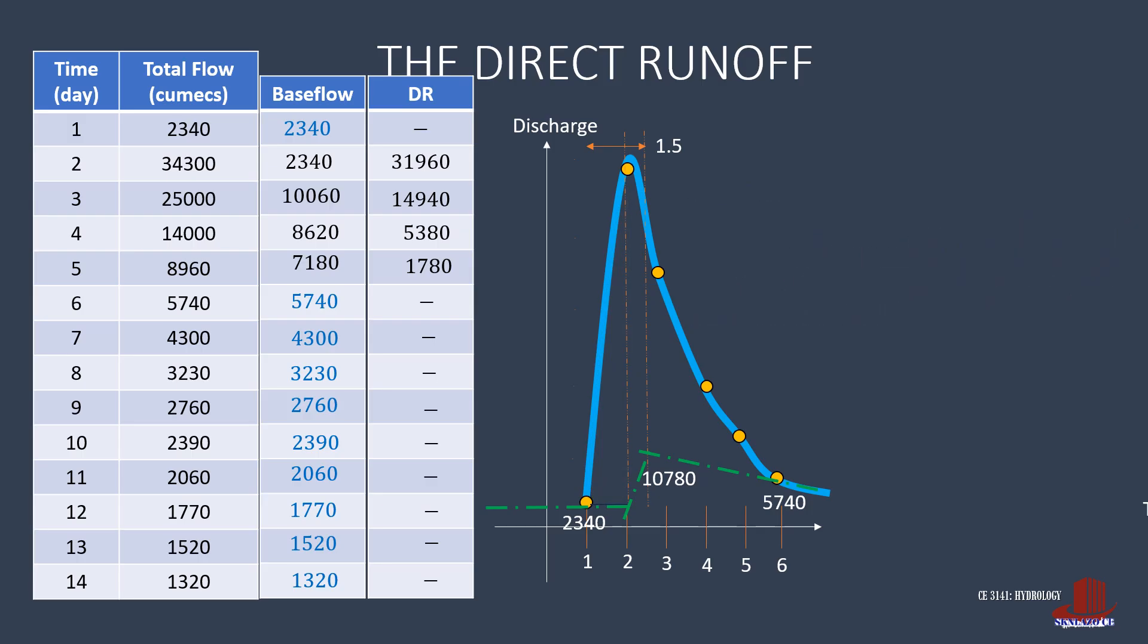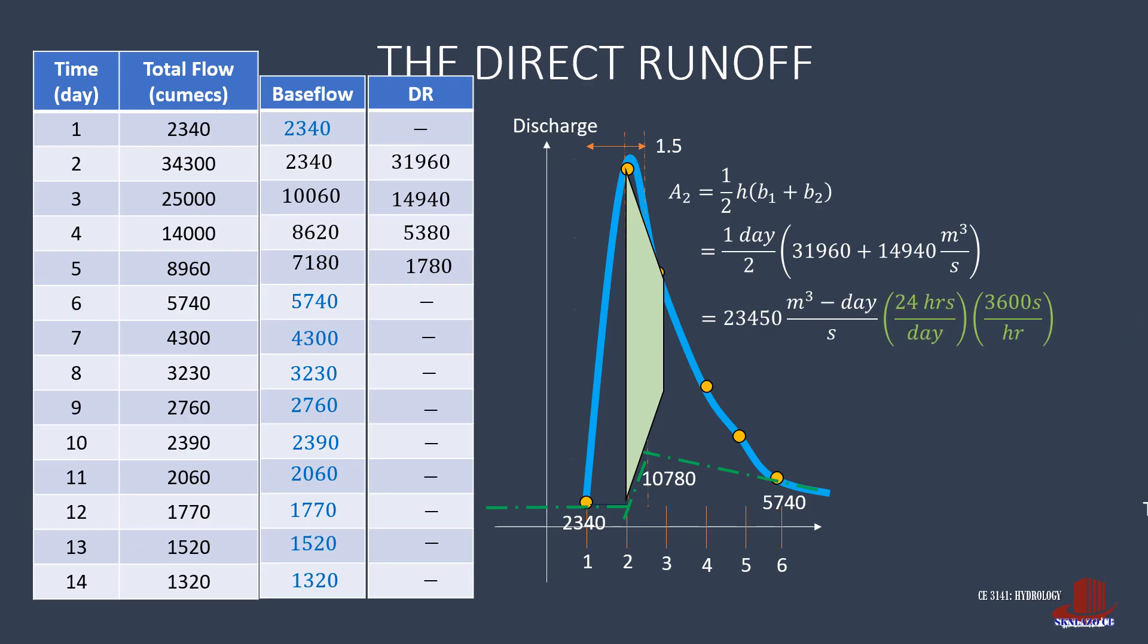The next area estimated is between day 2 to 3, where it is observed that the area is somehow a trapezoid. So the area we consider is half of H times the summation of 2 parallel bases. That is 1 day over 2 multiplied by the 2 DRs of 31,960 and 14,940, which is simplified as 23,450 cubic meters day per second. Now multiply the conversion factor of 24 hours per day and 3,600 seconds per hour, cancelling out these units. The second area is then computed as 2.02608 megacubic meters.